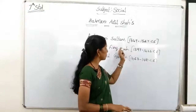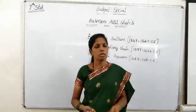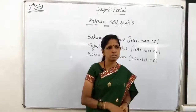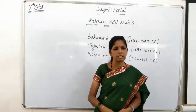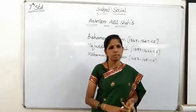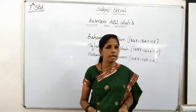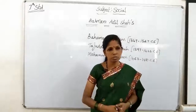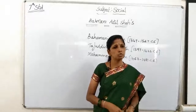The Bhamani sultans gave their services from 1347 to 1527 CE. The Bhamani state had parts of Karnataka, Maharashtra, Andhra Pradesh, and Telangana under its rule. Kalburgi and later Bidar were made as their capital cities. The Bhamani Empire was situated in the northern part of the Krishna river, while the Vijayanagara Empire was in the southern part.